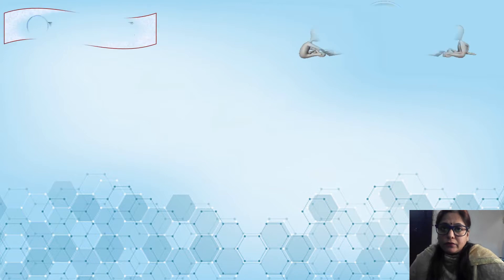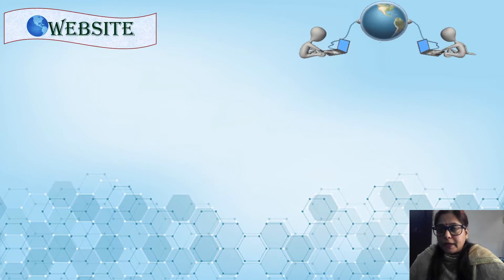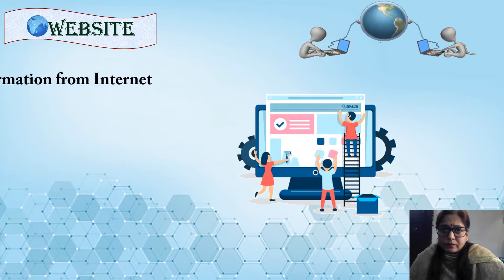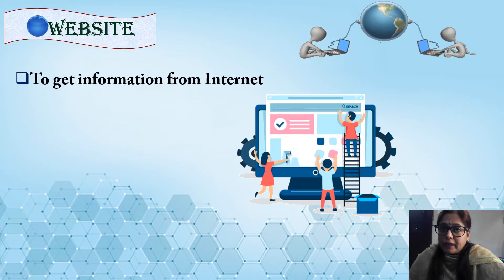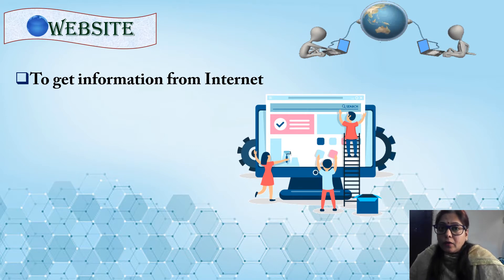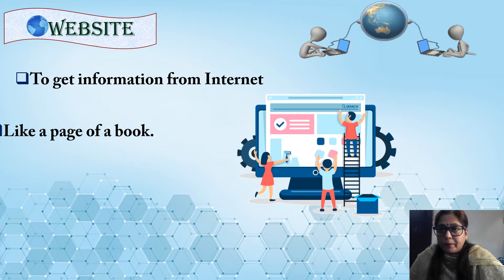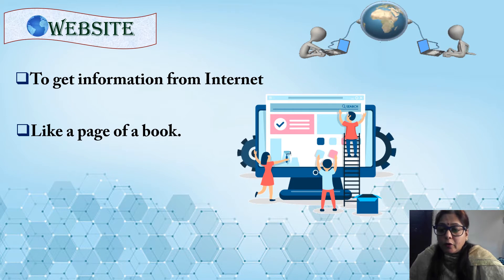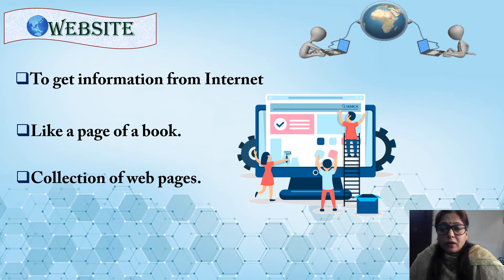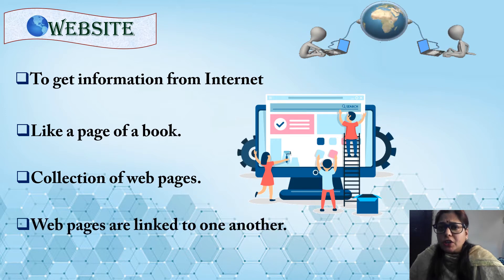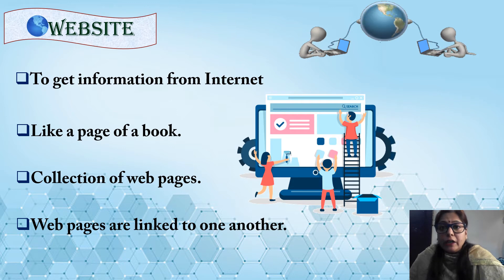Our first term is website. The information that we can get from internet is in the form of websites and web pages. As a book contains a number of pages, similarly, a website is a collection of related web pages which are linked to one another.